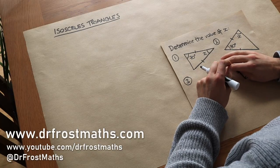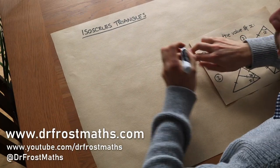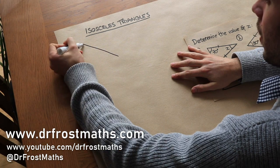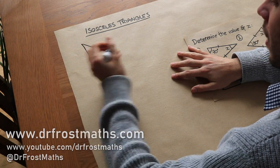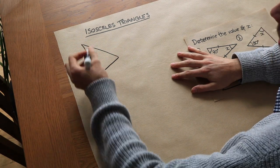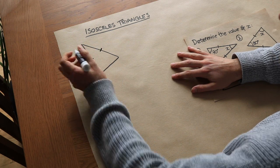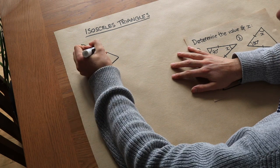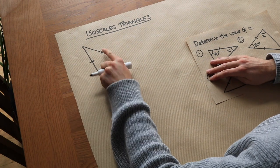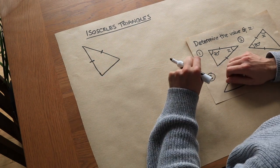Hello and welcome to this video on isosceles triangles. We previously saw that an isosceles triangle is where two of the sides are the same length. So we could say this length is the same as this length, and we put a mark on each to say they are the same length.